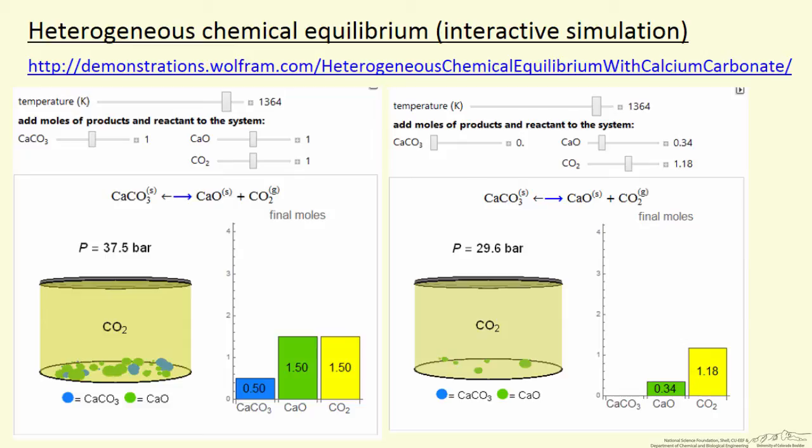On the right, notice we have no calcium carbonate. In other words, decrease the calcium carbonate. Of course, when we do that, CO2 and calcium oxide react up to a point. Equilibrium here is such that, notice we're now below the equilibrium pressure.